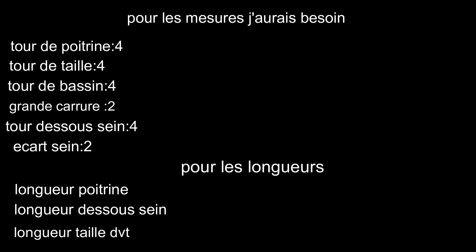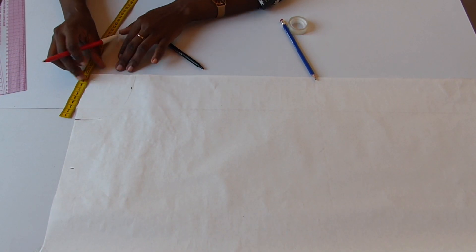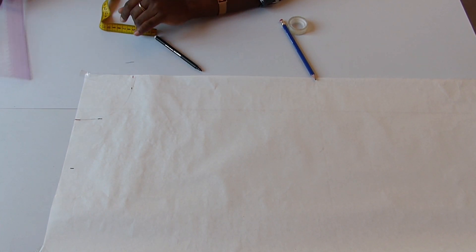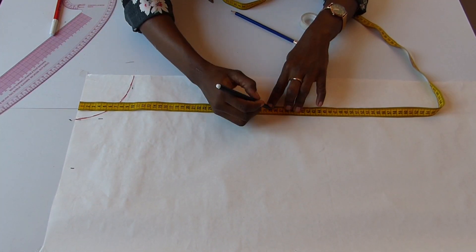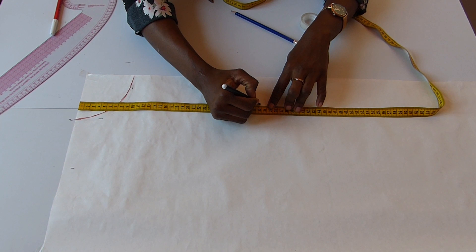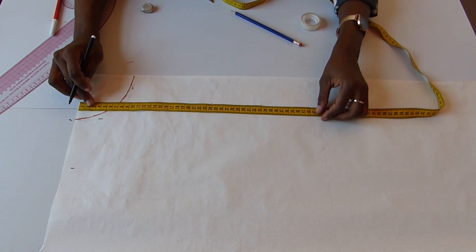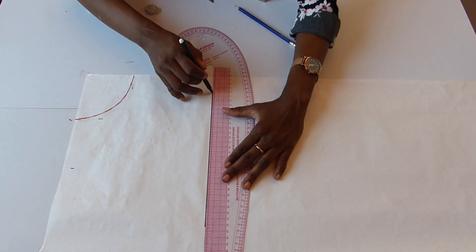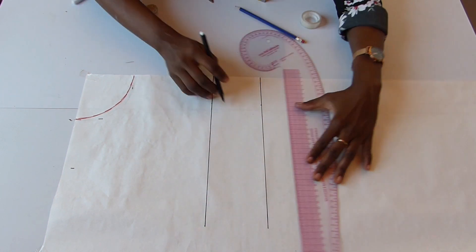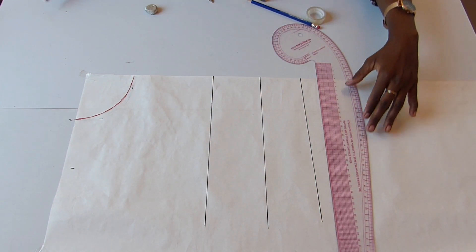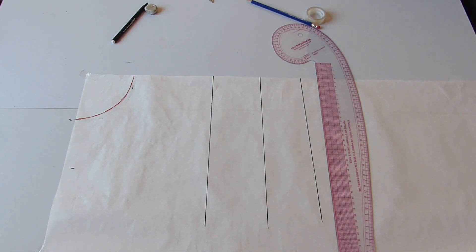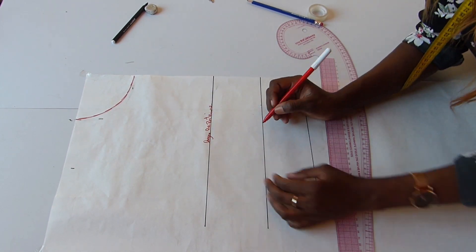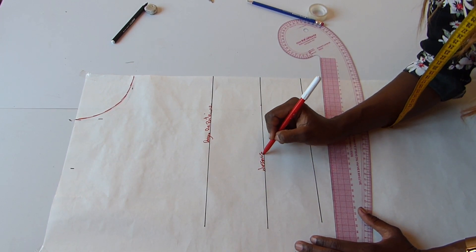Après avoir calculé toutes les mesures dont j'aurais besoin, je vais commencer par former mon encolure. Je suis descendue de 9 et j'ai ouvert de 7 cm. Après avoir fini de former mon encolure, je vais pointer mes différentes longueurs: ma longueur taille devant, ma poitrine et mon dessous.